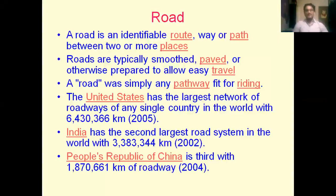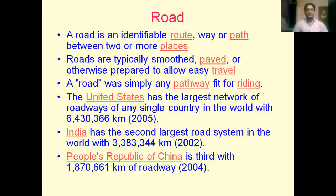A road is an identifiable route — a path or platform that connects localities. It is defined as an identifiable route, way, or path between two or more places. Roads are typically smooth or paved and prepared to allow easy travel. Simply put, a road is any pathway that is fit for riding.